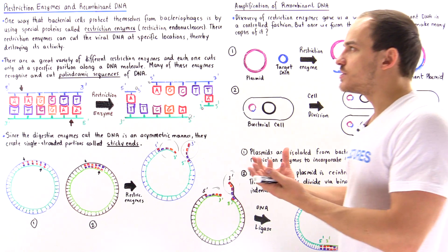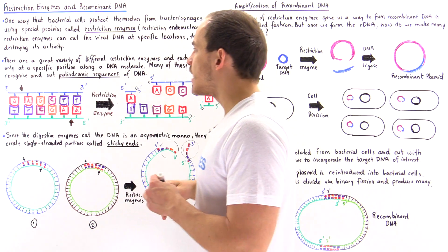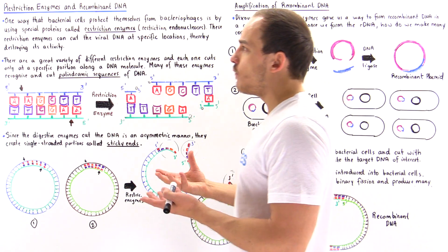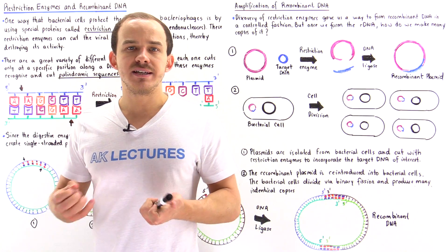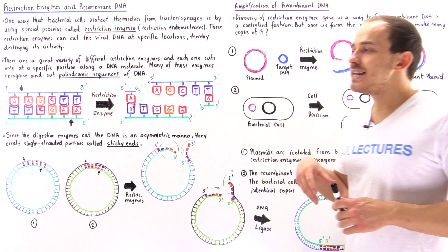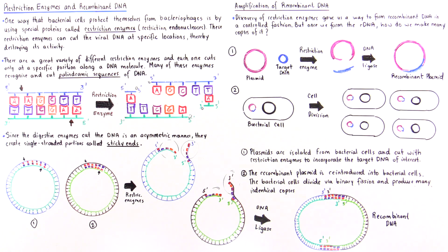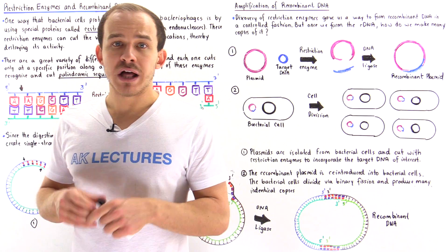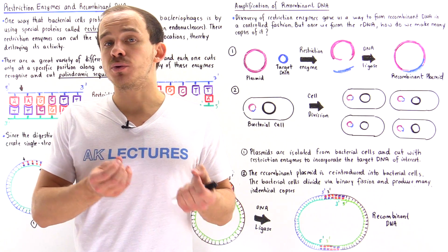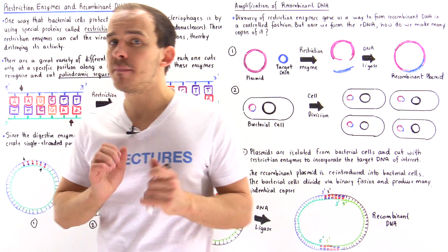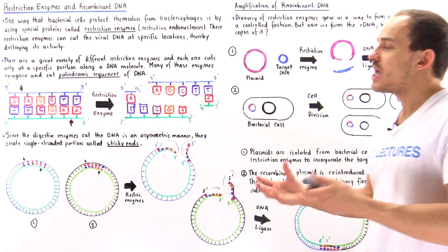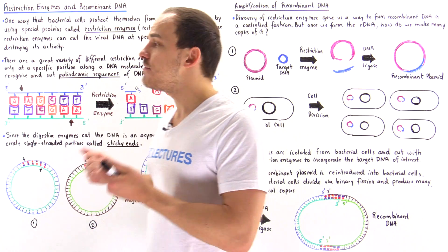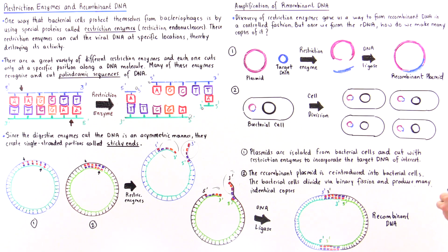Once scientists actually discovered restriction enzymes, they realized they could use these restriction enzymes to basically form any recombinant DNA molecule that they actually want. The next question is: once they form that recombinant DNA molecule, how do you amplify your results? How do you produce many copies of that same recombinant DNA molecule? Because if you want to conduct many different types of experiments, you need many different copies of that same recombinant DNA molecule.